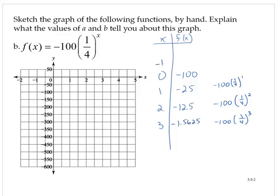What if we had negative 1 as the input? I'd have negative 100 times 1 fourth to the negative first power. That's negative 100 times 4, which is 400.